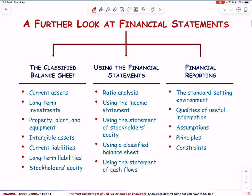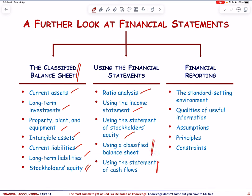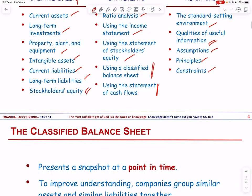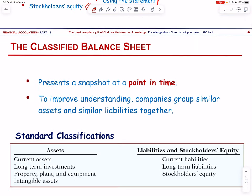This video is designed around the classified balance sheet, covering the different types of assets, liabilities, and stockholders' equity. We will use financial statements to calculate ratios through the income statement, stockholders' equity, classified balance sheet, and statement of cash flows. We will also talk about how we report financial statements, the standard-setting environment, the qualities of useful information, and the assumptions, principles, and constraints of accounting.